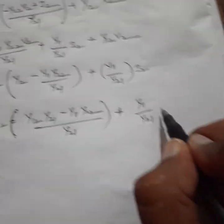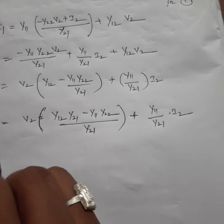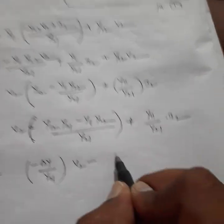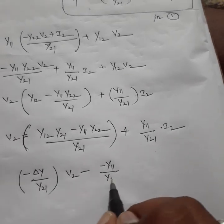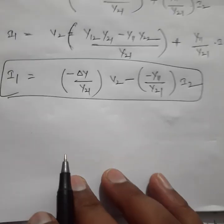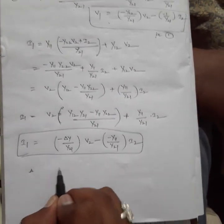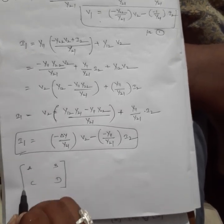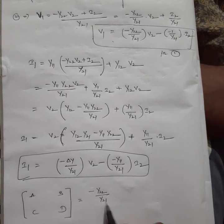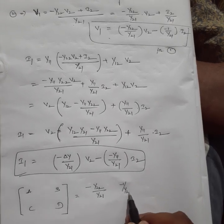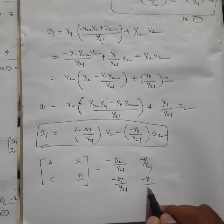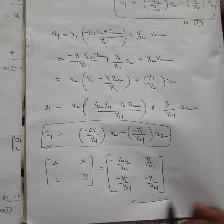By comparing the two boxed equations, the ABCD parameters are: A equals minus y22 by y21, B equals minus 1 by y21, C equals minus delta-y by y21, and D equals minus y11 by y21.